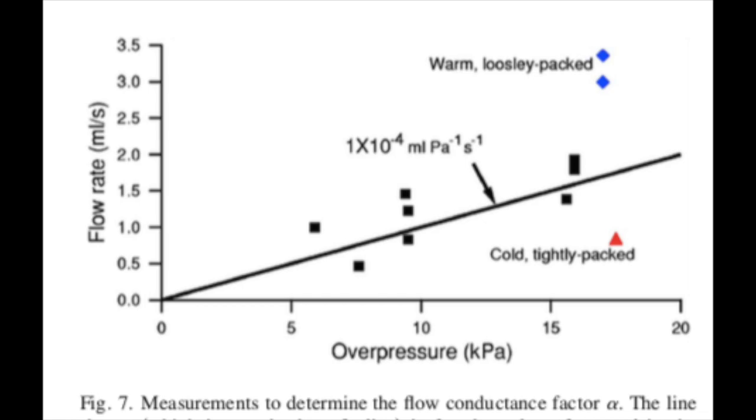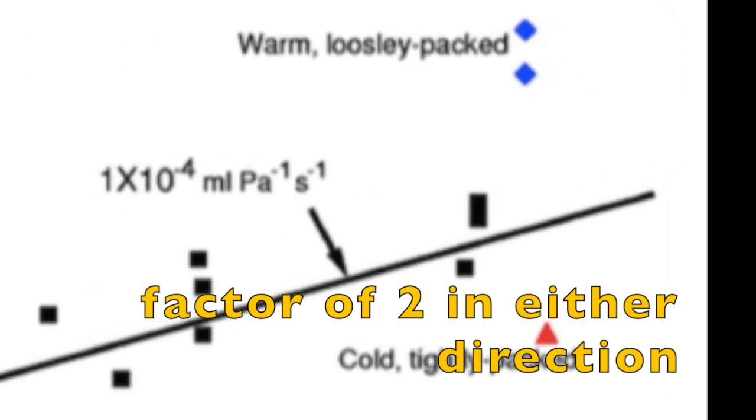King also describes how he made measurements for the flow parameter by graphing the flow rate as a function of pressure difference, and notably how this changes when the coffee is packed more tightly or more loosely.